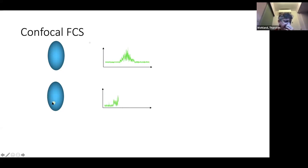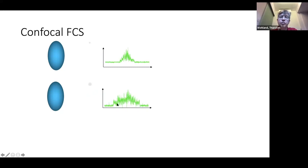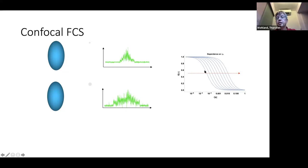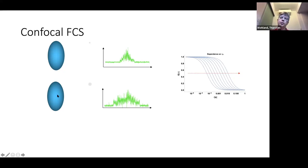A larger particle moves a little bit slower, so you get longer fluctuations because it stays longer in the focal volume. Longer fluctuations mean the autocorrelation function remains dependent on its own signal for longer. The correlation function widens as the particle moves more slowly, plotted here on a logarithmic scale to make this easier to see.